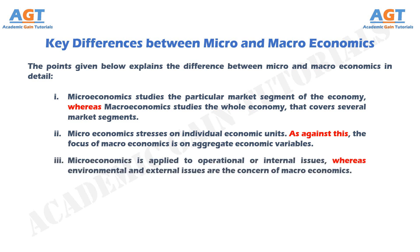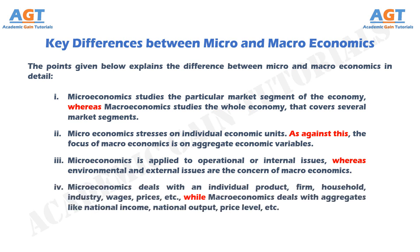Number 3: While microeconomics is applied to operational or internal issues, environmental and external issues are the concern of macroeconomics. Number 4: Microeconomics deals with an individual product, firm, household, industry, wages, prices, etc. While macroeconomics deals with aggregates like national income, national output, price level, etc.